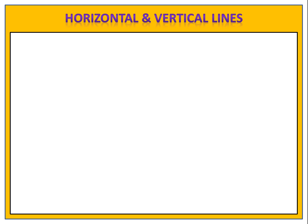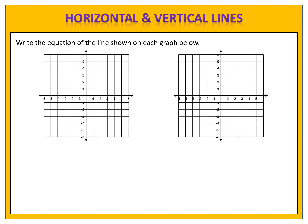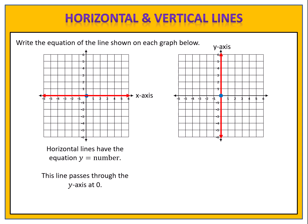Next, let's look at some unusual examples that are often problematic: the cases where the horizontal line is the x-axis, or the vertical line is the y-axis. Horizontal lines have the equation y equals a number. This first graph passes through the y-axis at 0, so the equation is y equals 0. The equation of the x-axis is y equals 0, because y equals 0 means all points on that line have a y-value of 0, and any point on the x-axis is some number comma 0.